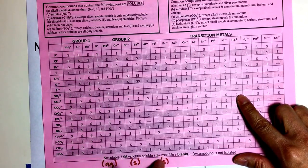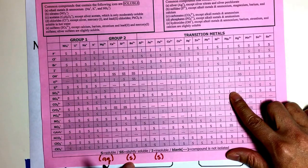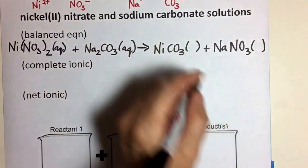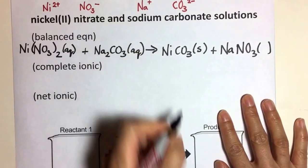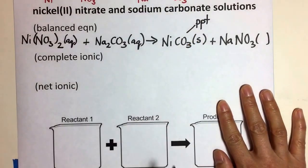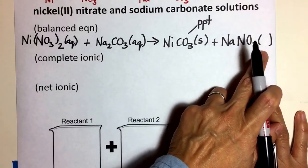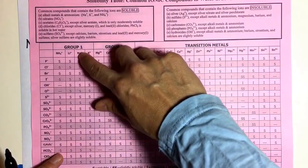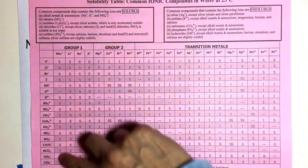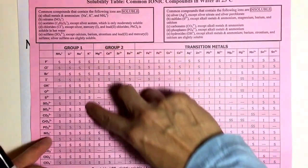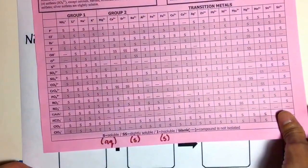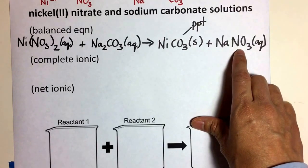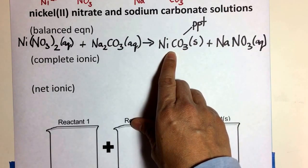Something slightly soluble will be a solid too, but something soluble means the ionic compound formed is aqueous. I designate nickel two carbonate as my solid because this is my precipitate — that's my driving force for this reaction so far. There could be another driving force depending on the solubility of sodium nitrate. Notice the alkali metals tend to be very soluble most of the time. Sodium nitrate is soluble — S means soluble — so I designate it as aqueous. That means this ionic compound will be dissolved in solution as ions, while nickel two carbonate will remain together as a precipitate, a solid.